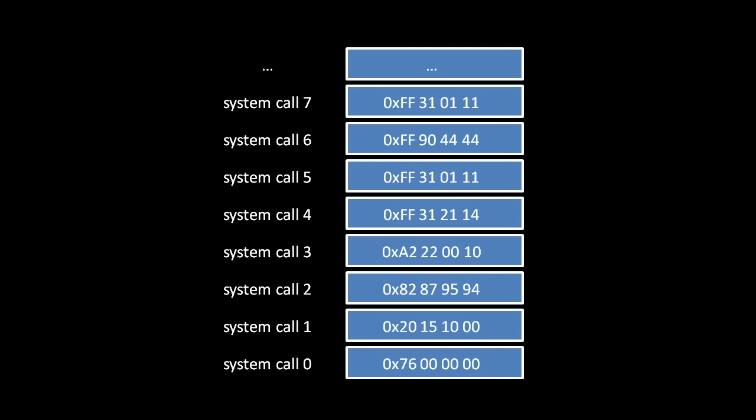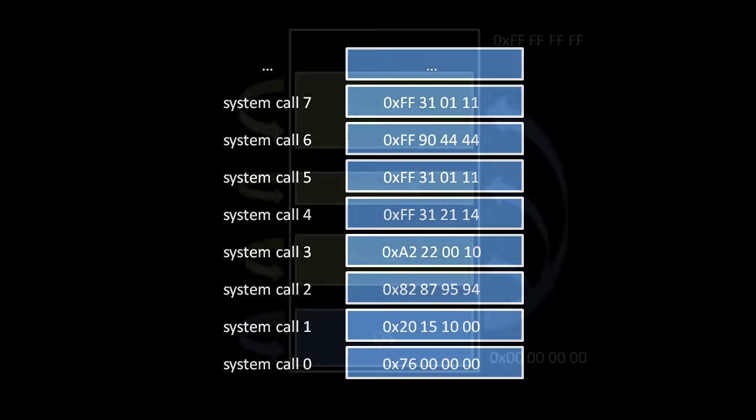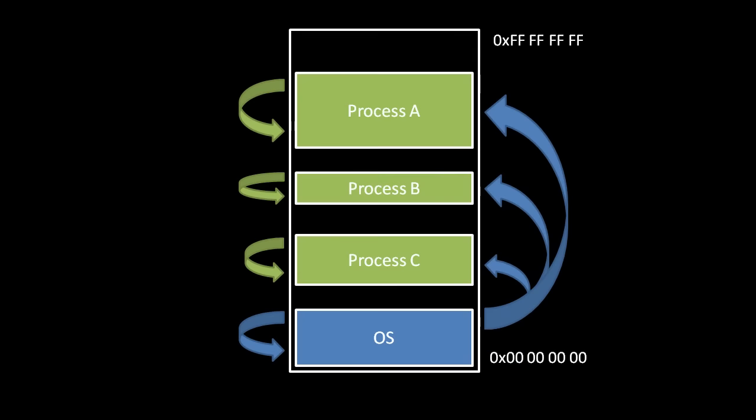Because the operating system controls this system call table, a process can only jump execution to addresses of the operating system's choosing. So, aside from this loophole, how do the operating system and hardware restrict a process to only access its own portion of memory? Well, first off, the CPU actually runs in two different privilege levels.